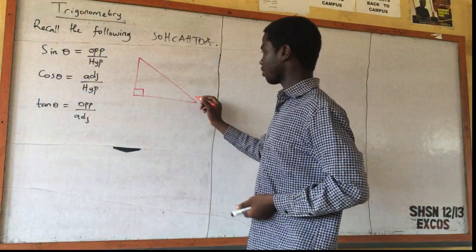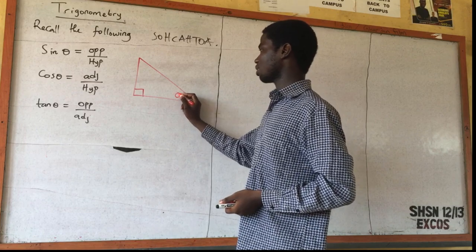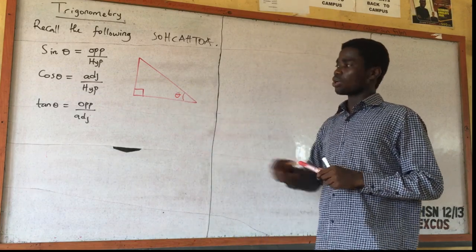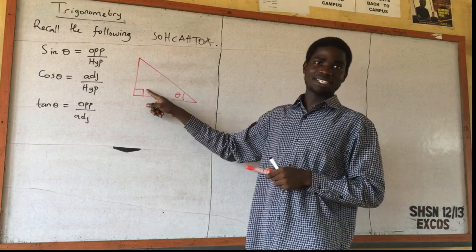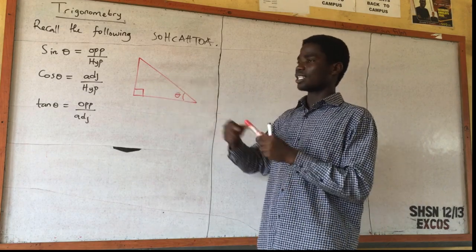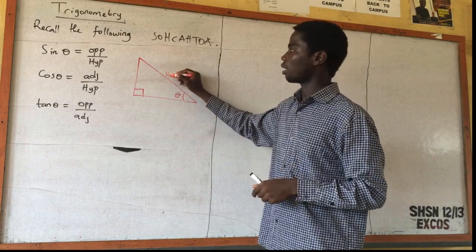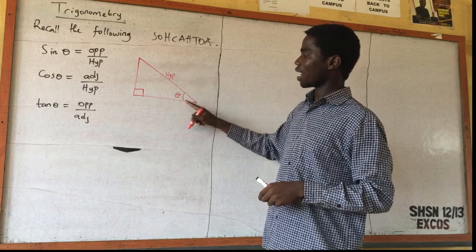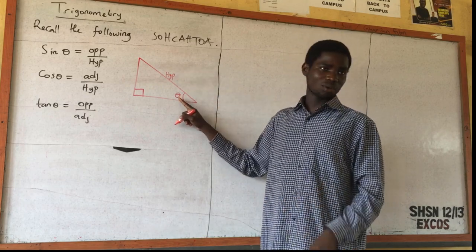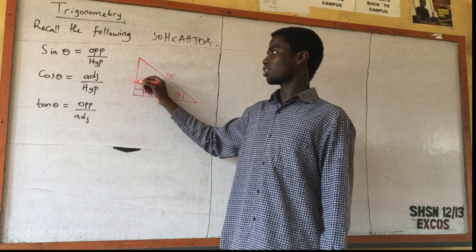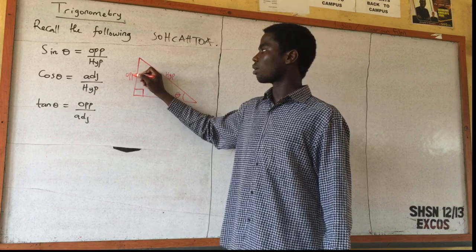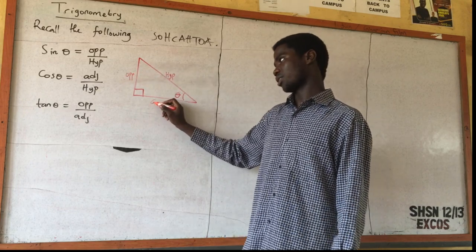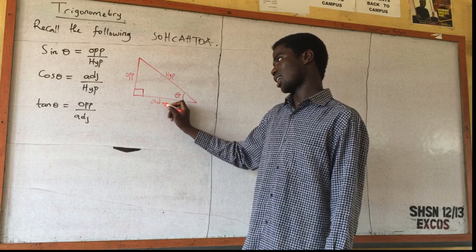Where the 90 degrees is facing is the hypotenuse. Where the angle theta is facing is called the opposite. Of course a triangle has three sides, so the remaining side is the adjacent.